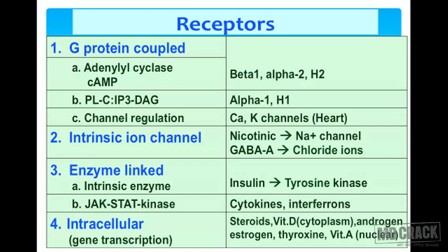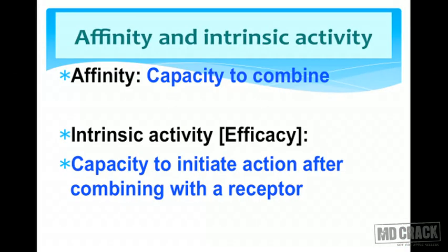Some receptors are inside the cells — called intracellular receptors — and they work by gene transcription. They may be present in the cytoplasm, as in the case of steroids and vitamin D, or in the nucleus — called nuclear receptors — in the case of androgen, estrogen, thyroxine, and vitamin A.